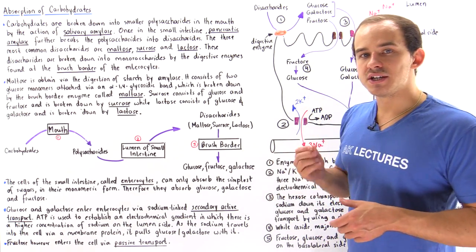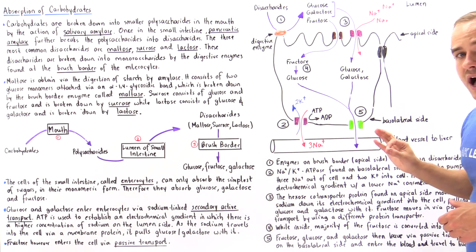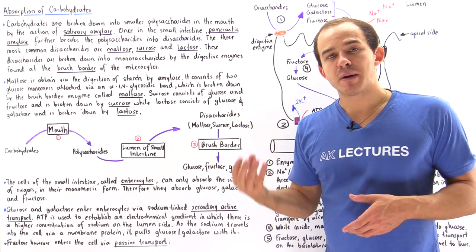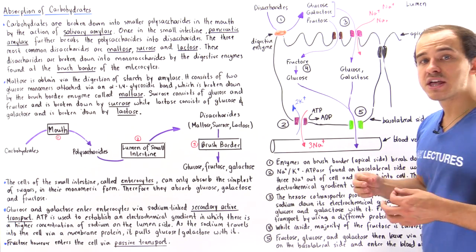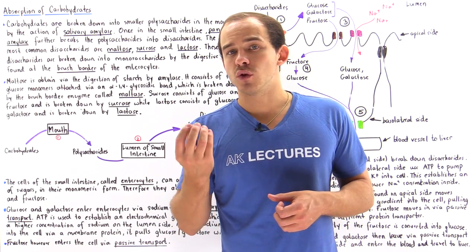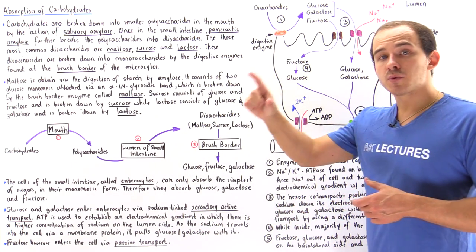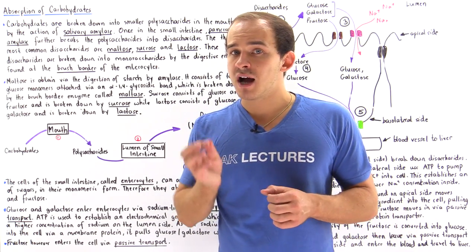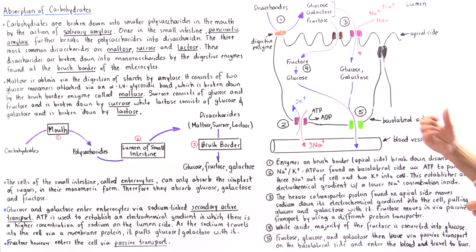So what happens is, on the membrane of our enterocytes — the cells in our small intestine — we have specialized types of digestive enzymes that can break down disaccharides into their individual monomers. The membrane of our enterocyte is known as the brush border because it consists of microvilli.